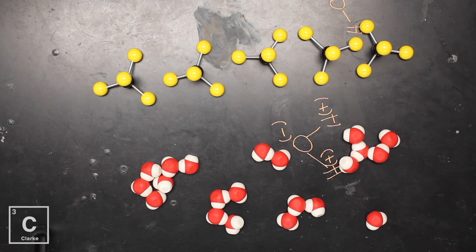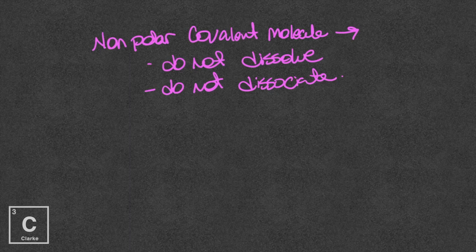A nonpolar molecule does not have any slightly positives or slightly negatives — no dissolving. So let's review quickly. Ionic compounds dissolve because they completely disassociate in water because of those charges. Polar covalent molecules do dissolve because they've got those partial charges, but they do not disassociate. Nonpolar covalent molecules not only do not dissolve, they do not disassociate. The main reason a nonpolar does not disassociate is there are no partial charges.